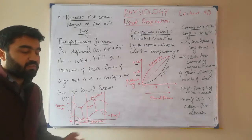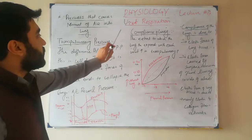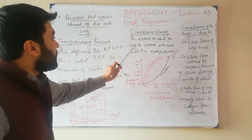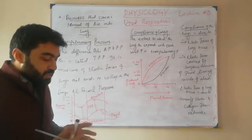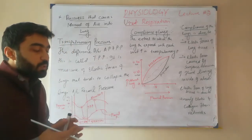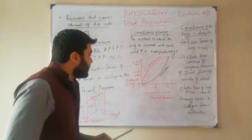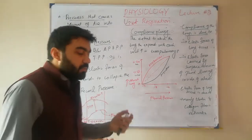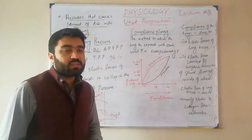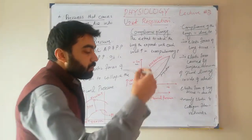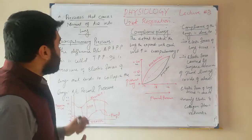Transpulmonary pressure shows the compliance of the lung — it is a recoil pressure showing how much recoil is present in the lung. Compliance is the extent to which the lung expands with each unit increase in transpulmonary pressure. As we increase transpulmonary pressure, the lung will expand more, and there will be more recoil, meaning the lung will deflate with more strength. As an example: if we start filling a balloon with air, it stretches out until it bursts, because we cross the compliance level of that balloon. In the same way, the lung also has a compliance level and within that range also has a recoil force, which is the transpulmonary pressure.